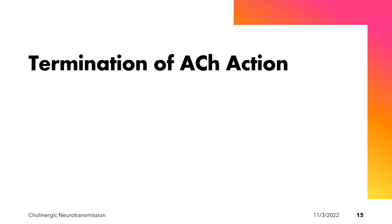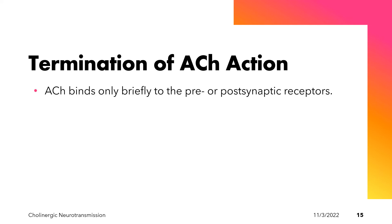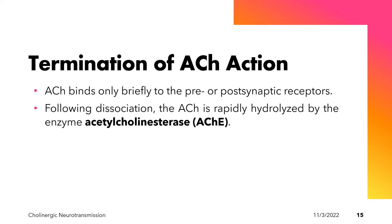After acetylcholine is released in the synaptic cleft, it undergoes receptor events wherein some acetylcholine will bind to cholinergic receptors in the postsynaptic membrane. After that, termination of acetylcholine action takes place. Acetylcholine binds only briefly to the pre- or postsynaptic receptors, and following dissociation, the acetylcholine is rapidly hydrolyzed by the enzyme acetylcholinesterase (AChE).